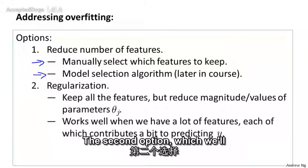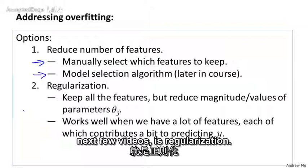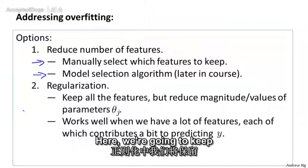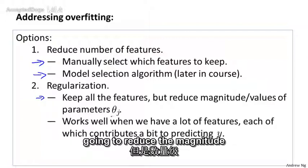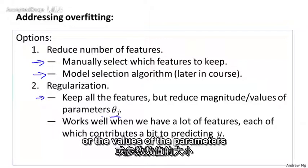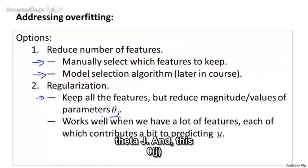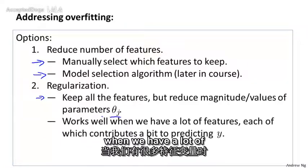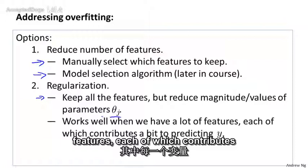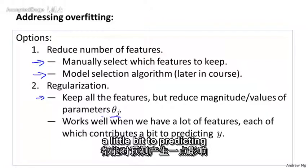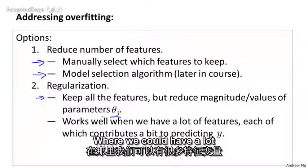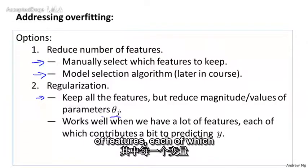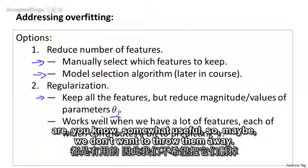The second option, which we'll talk about in the next few videos is regularization. Here we're going to keep all the features, but we're going to reduce the magnitude or the values of the parameters θⱼ. And this method works well, we'll see, when we have a lot of features, each of which contributes a little bit to predicting the value of y, like we saw in the housing price prediction example, where we could have a lot of features, each of which are somewhat useful, so maybe we don't want to throw them away.